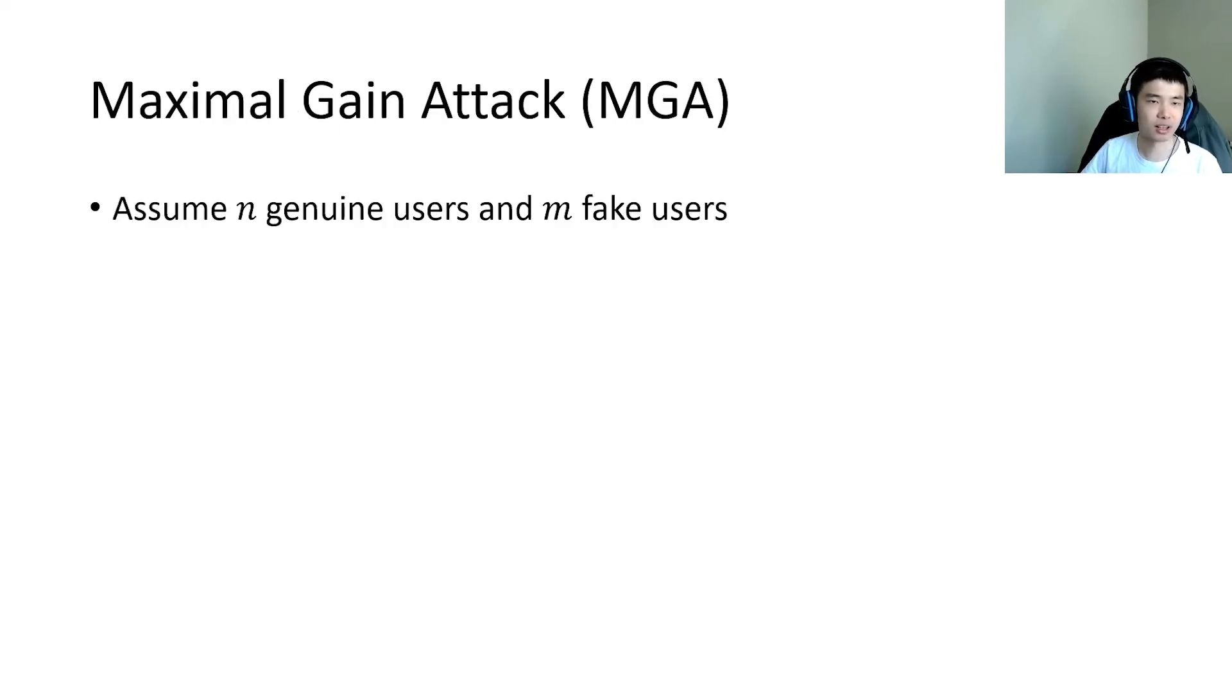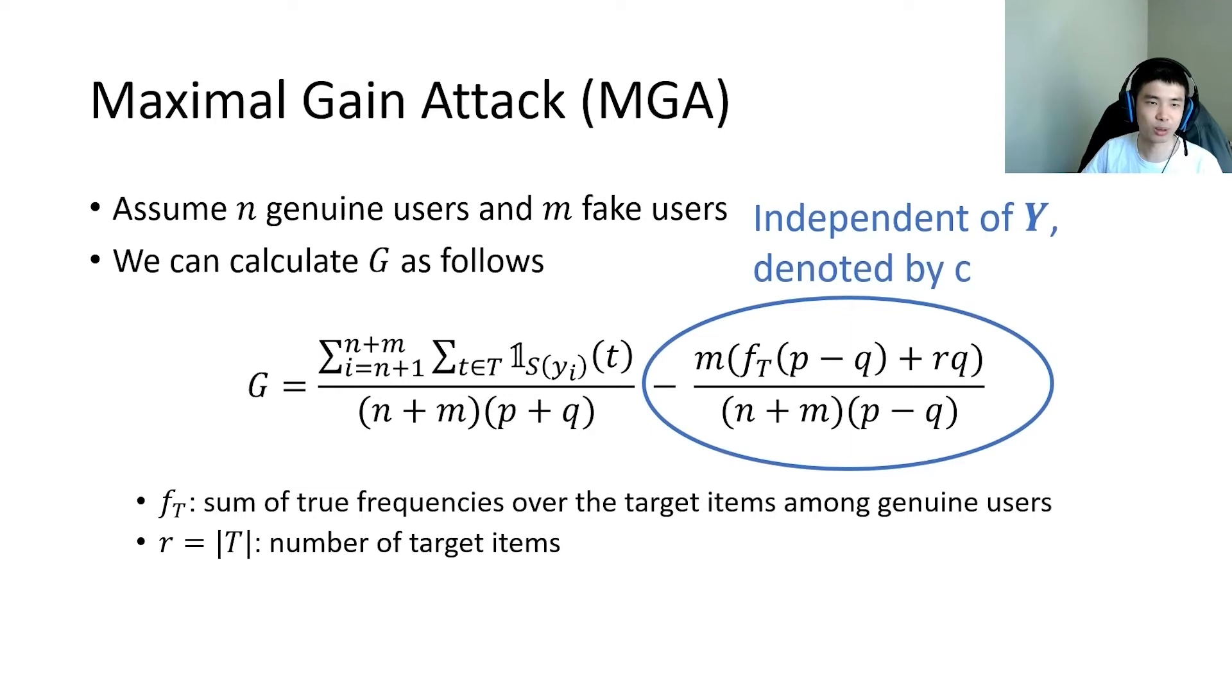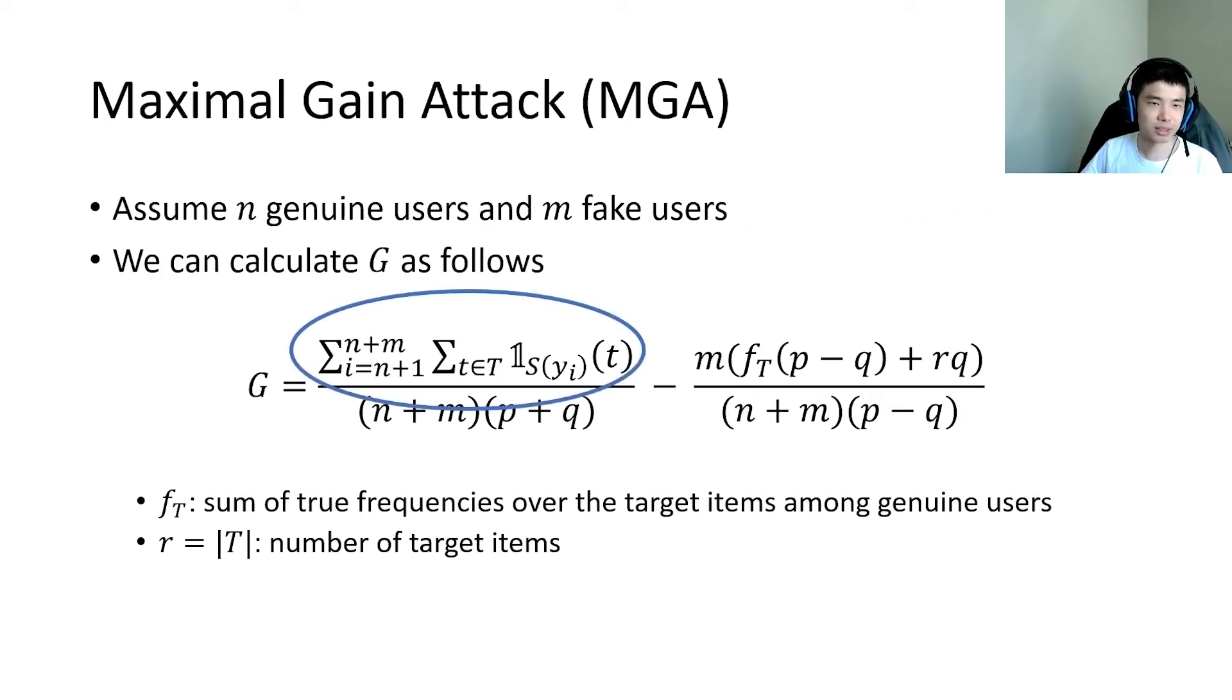Specifically, let's first assume there are N genuine users and M fake users in the protocol. Then we can write the overall gain in a closed form as the equation here. In the equation, the second term is independent of the attacker crafting y, and hence we denote it by C to imply that this is a constant when the parameters are fixed. Then, maximizing G is equivalent to maximizing this term.